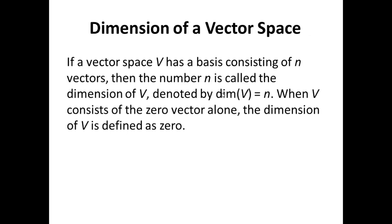That leads naturally to the concept of the dimension of a vector space. If a vector space V has a basis consisting of N vectors, then the number N is actually called the dimension of V and denoted by dim(V) equals N.